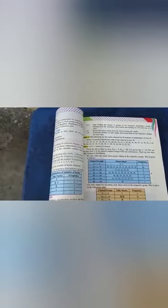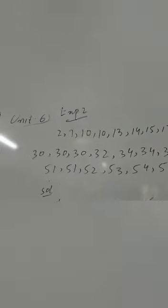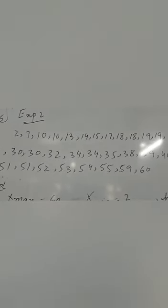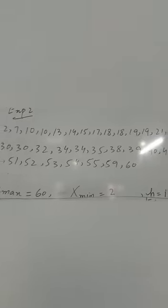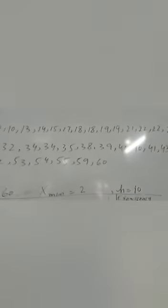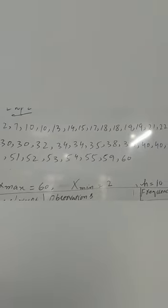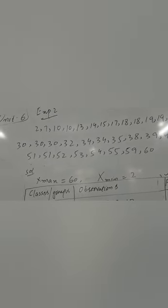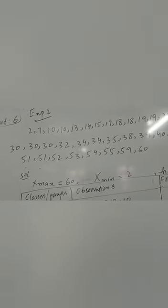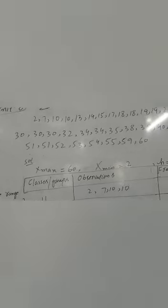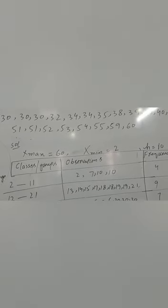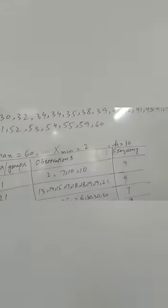We are given marks for students in mathematics. First of all, you have to write the data given to you and arrange it in order. The data arranged in sequence starts: 2, 7, 10, 10, 13, 14, 15, 17, 18, 19, 19. The data given is not in sequence, so you have to write it in sequence — it will be easier to solve questions. After that, we select the maximum value, which is 60, and the minimum value, which is 2.